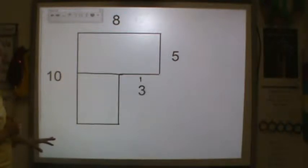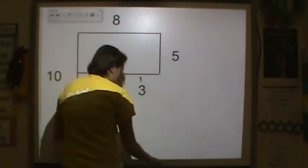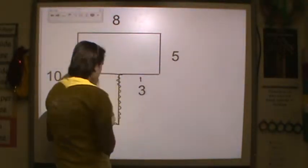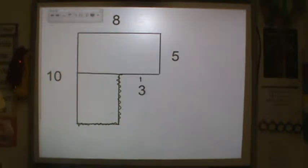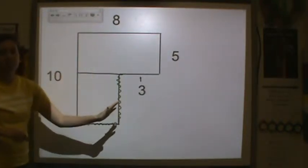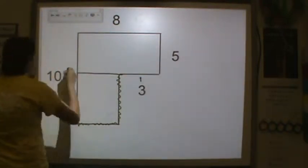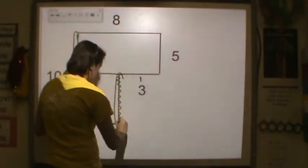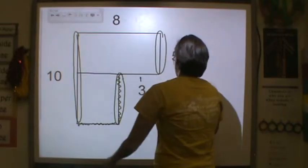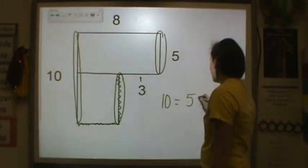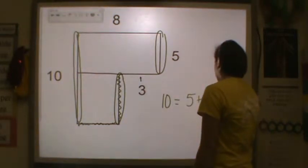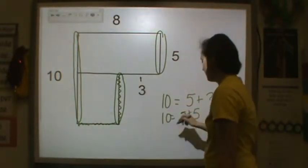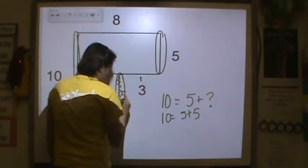My next step was to find any missing lengths. I have a missing length here and a missing length down here. If you remember from the earlier lessons, lessons one and two, I told you that the lengths and the widths will add up to be the same on an irregular shape. So this left side is going to be the same as the right side. My total is 10, so 10 is equal to 5 plus 5. The missing width here is equal to 5.